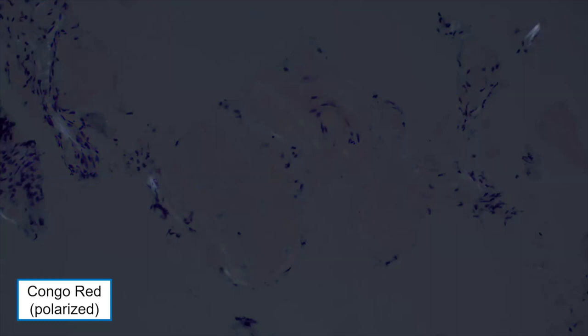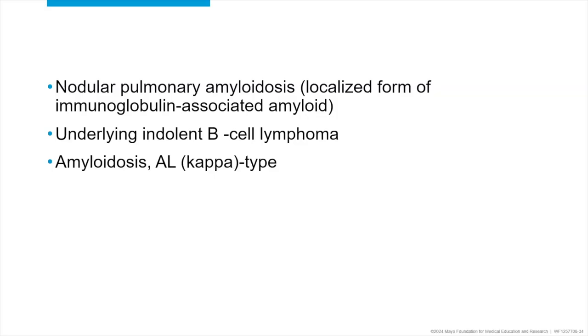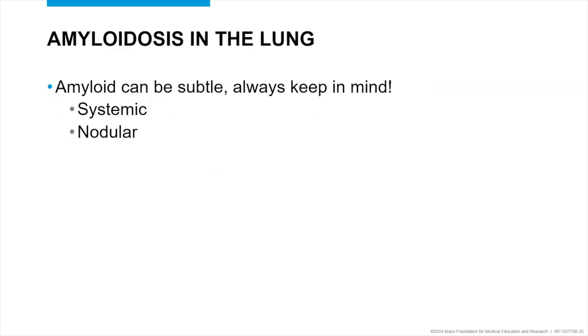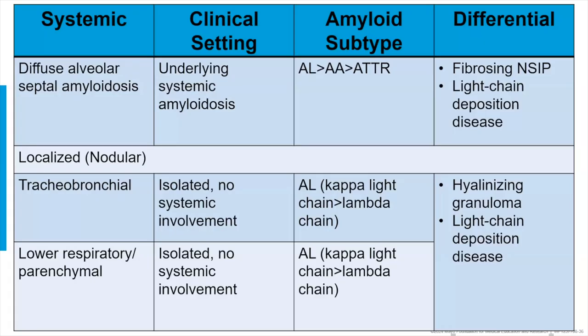This is actually more common than not in many cases. Even in a case with so much amyloid — like nodular deposits — it doesn't actually refract very well. That's what leads to false negatives or equivocal stains. This patient ended up having an indolent B cell lymphoma, which is often the case with nodular amyloid deposition in the lung. In the lung it can be quite subtle — you can have systemic or nodular forms. With diffuse septal amyloidosis, think underlying systemic amyloidosis; with nodular, think more about an indolent B cell lymphoma. If you find nodular amyloid deposition, the next thing you do is look for the lymphoma.